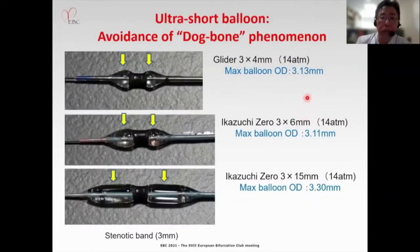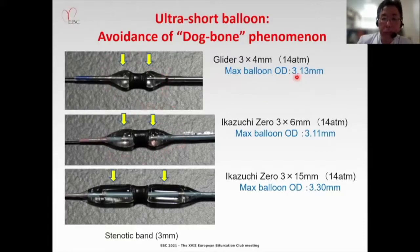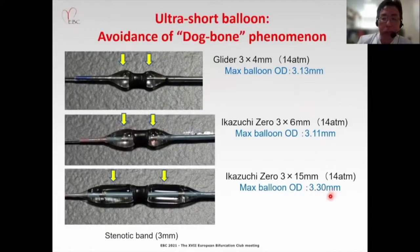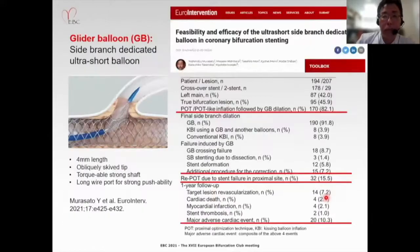In a test for over-dilation at 14 atm in hard stent collision, either a 4 or 6mm balloon did not show dilation over the compressed card, while over-dilation — the so-called top-form phenomenon — occurred with the long balloon. This suggests the short balloon is superior to the long balloon for sufficient side branch ostium expansion and less injury.